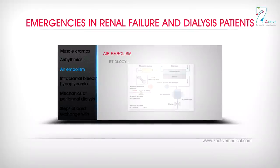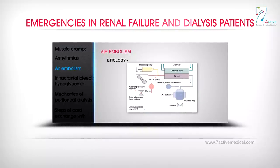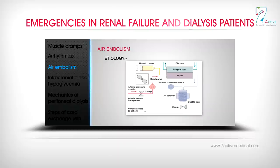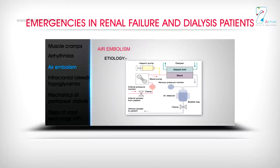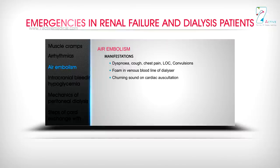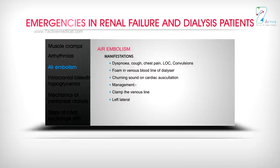Air embolism — etiology: breach anywhere in the dialysis circuit (dialyzer, dialysis fluid, blood lines, heparin pump, blood pump, clamps, arterial/venous pressure monitors, air detector, bubble trap). Manifestations: dyspnea, cough, chest pain, loss of consciousness, convulsions, foam in venous bloodline or dialyzer, churning sound on cardiac auscultation. Management: clamp the venous line, place patient in left lateral position, administer 100% O2, try aspiration of air from ventricle.